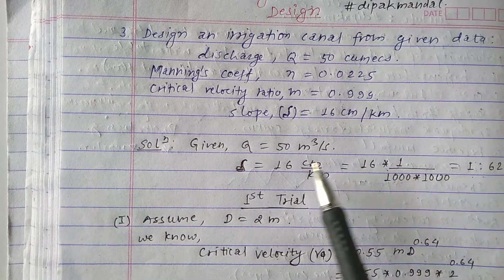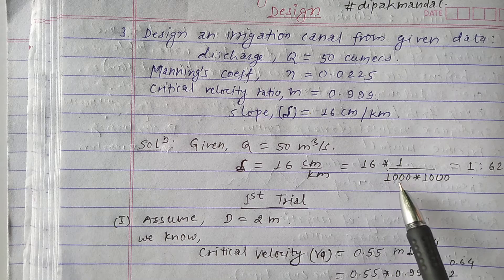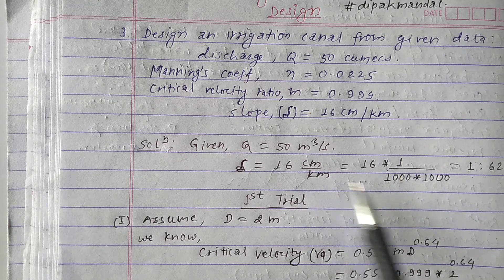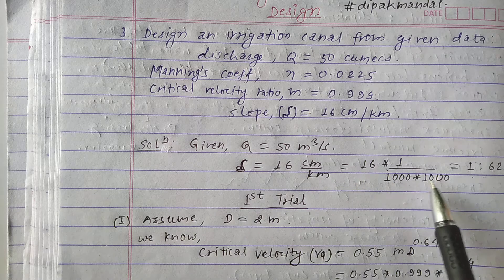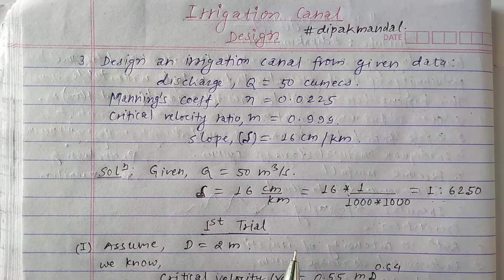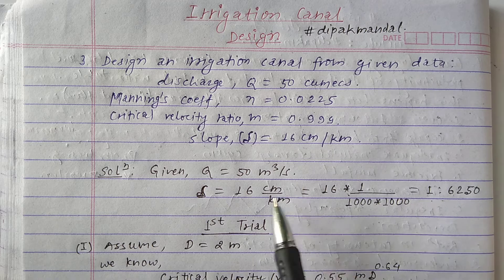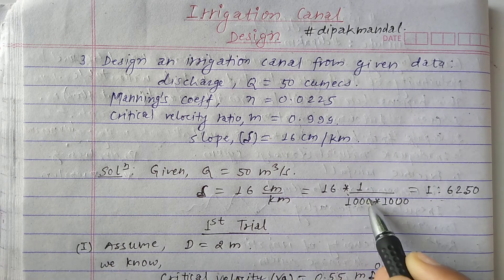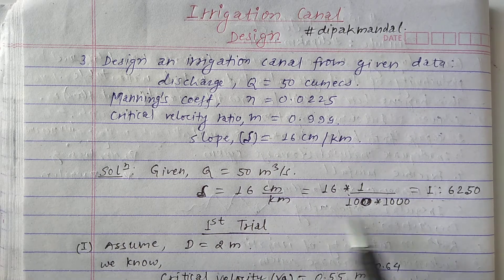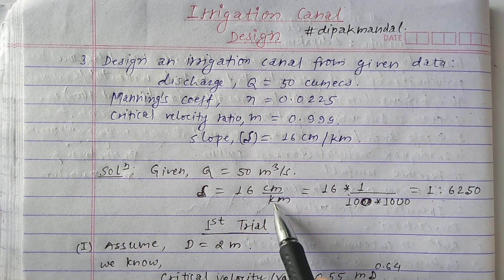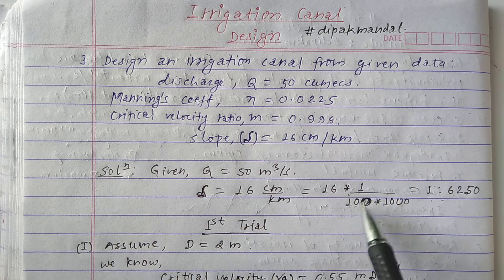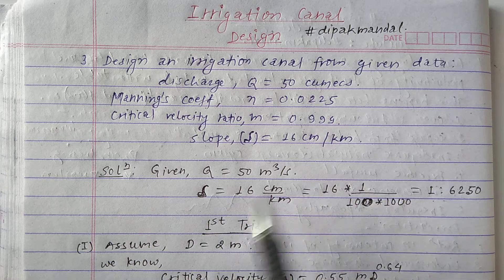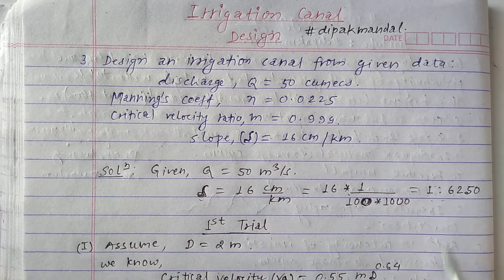To convert cm to meters, we divide by 100. To convert kilometers to meters, we multiply by 1000. After performing this conversion, we get the slope S = 1 : 6250. So the value of S = 1 : 6250.